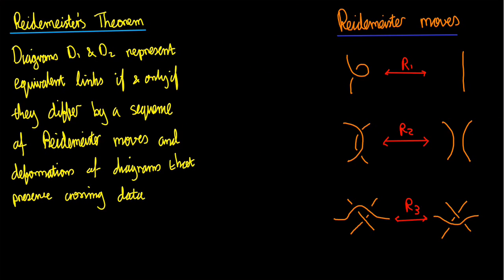Now, we come to an extremely important theorem. It's called Reidemeister's theorem. It says the following: diagrams D1 and D2 represent equivalent links - in other words, the links they represent are the same, they're equivalent, they can be deformed within R3 - if and only if the diagrams differ by a sequence of Reidemeister moves and deformations of diagrams that preserve the crossing data. Certainly, if I take a diagram and say rotate it through 90 degrees, that represents the same knot or link as the previous diagram. However, you could do something more complicated, and that's what these Reidemeister moves say.